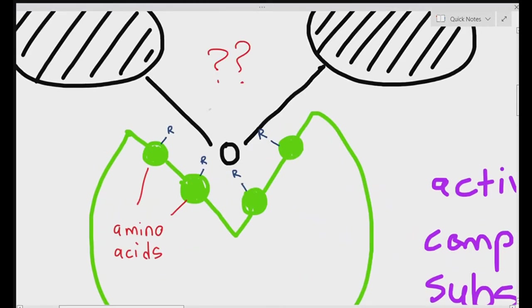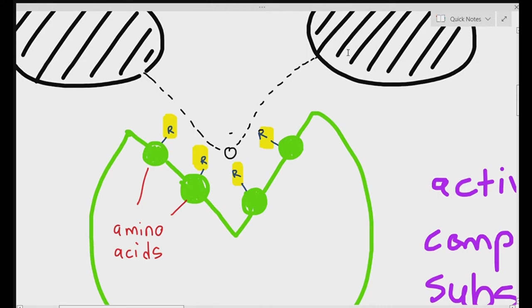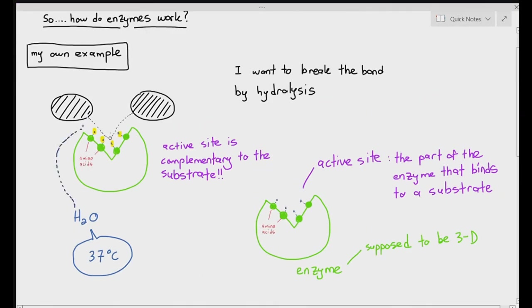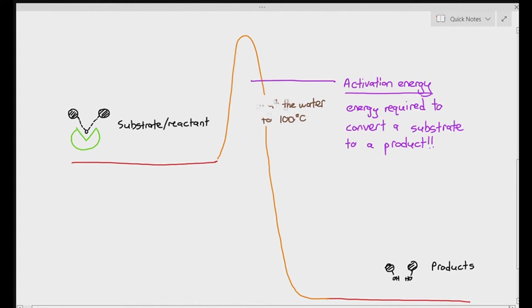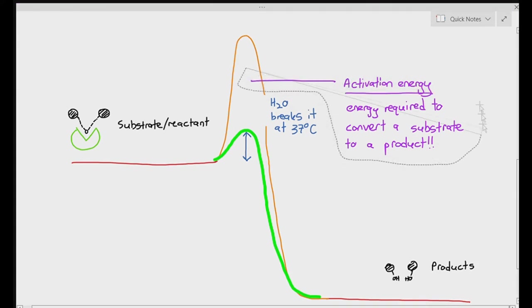When the active site fits with the substrate at the glycosidic bond, the R groups I'm highlighting don't break the glycosidic bond directly — but they interact with and weaken it. When the glycosidic bond is weakened, water at 37°C is able to break it. You don't need to heat water to 100°C anymore, because the R groups of the enzyme's active site weakened the bond. For the human body, water at 37°C — our core body temperature — is sufficient to break the glycosidic bond.